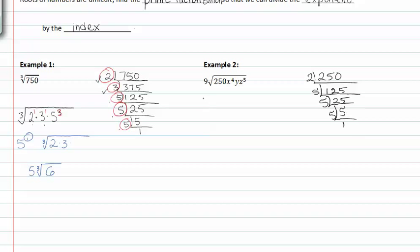We can now rewrite this problem with 9 out front and the square root of 2 times 5 to the third times x to the fourth times y to the first z to the fifth. Notice I took my fives and made it 5 to the third because there's fives multiplied three times and 2 to the first.